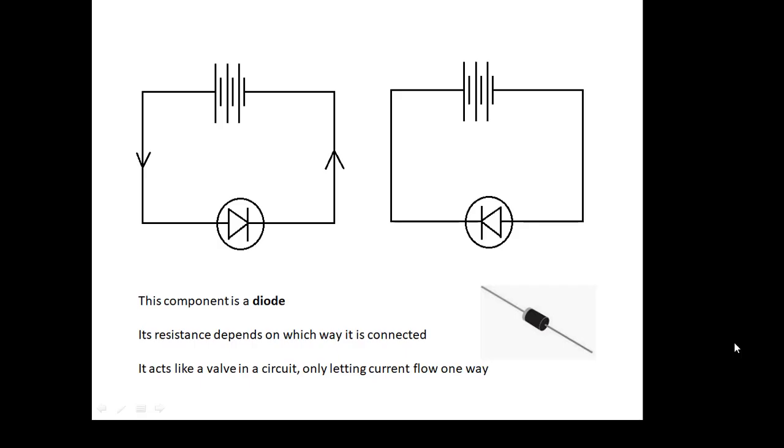Last component for now in this video is something called a diode. Now a diode is a bit like a valve. On the left there, you'll find that you have a big current. On the right, you'll find that you have a very, very small current. In fact, no current we will say. So it's controlling the current by only letting it go one way. And that's in the direction of the arrow. And it's like a valve. It only lets the current flow one way. And that's a diode.